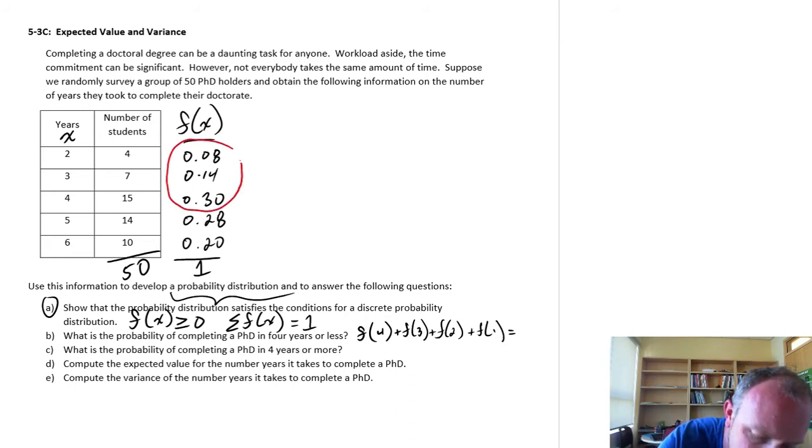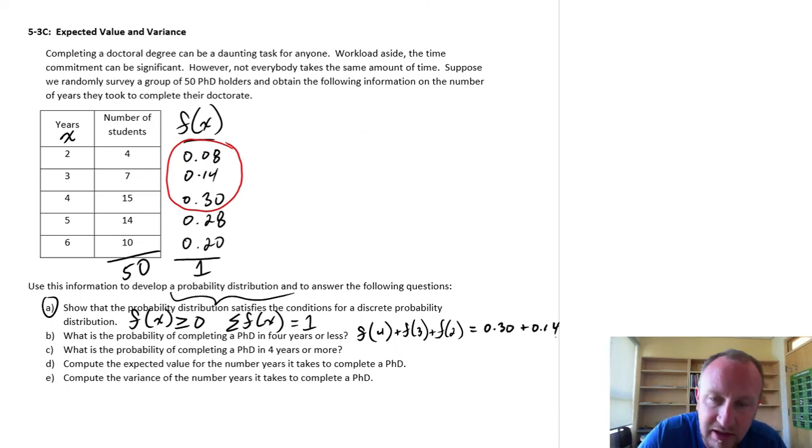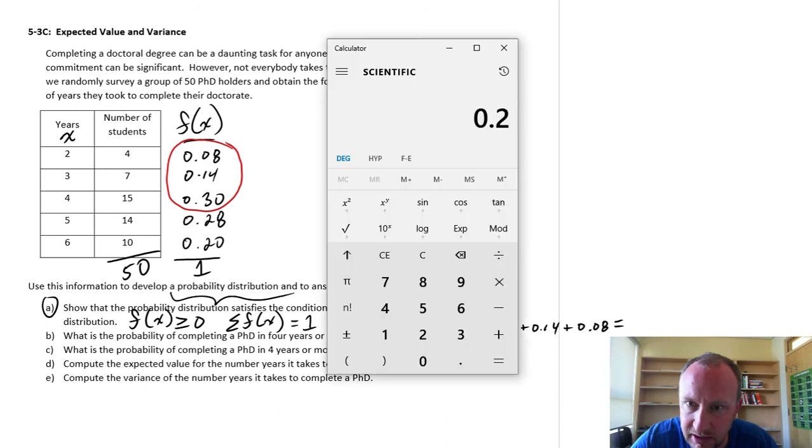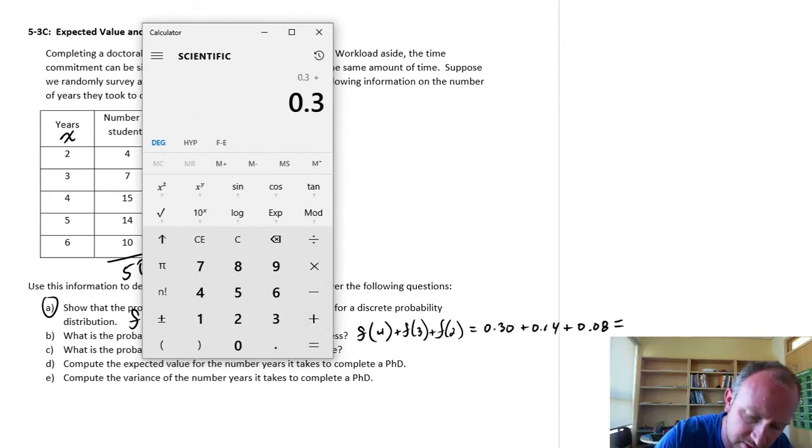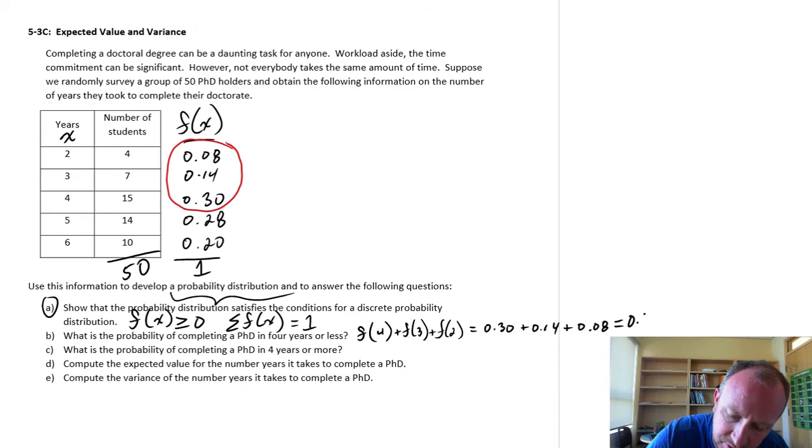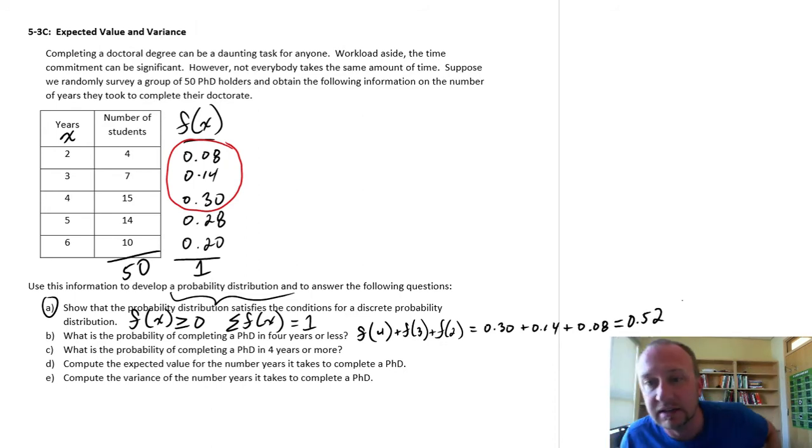I'm going to be adding up, oh, I don't have one, silly mistake. So 4, 3, 2, or 1. And so this is just simply going to be, there's a 30% chance they did it in 4 years, plus the 14% chance they did it in 3 years, plus the 8% chance that it was done in 2 years. So if we add all of that up, 0.3 plus 0.14 plus 0.08, so 0.52. So we can say there's a little bit more than half, 52% chance that a randomly selected PhD holder completed their PhD in 4 years or less.